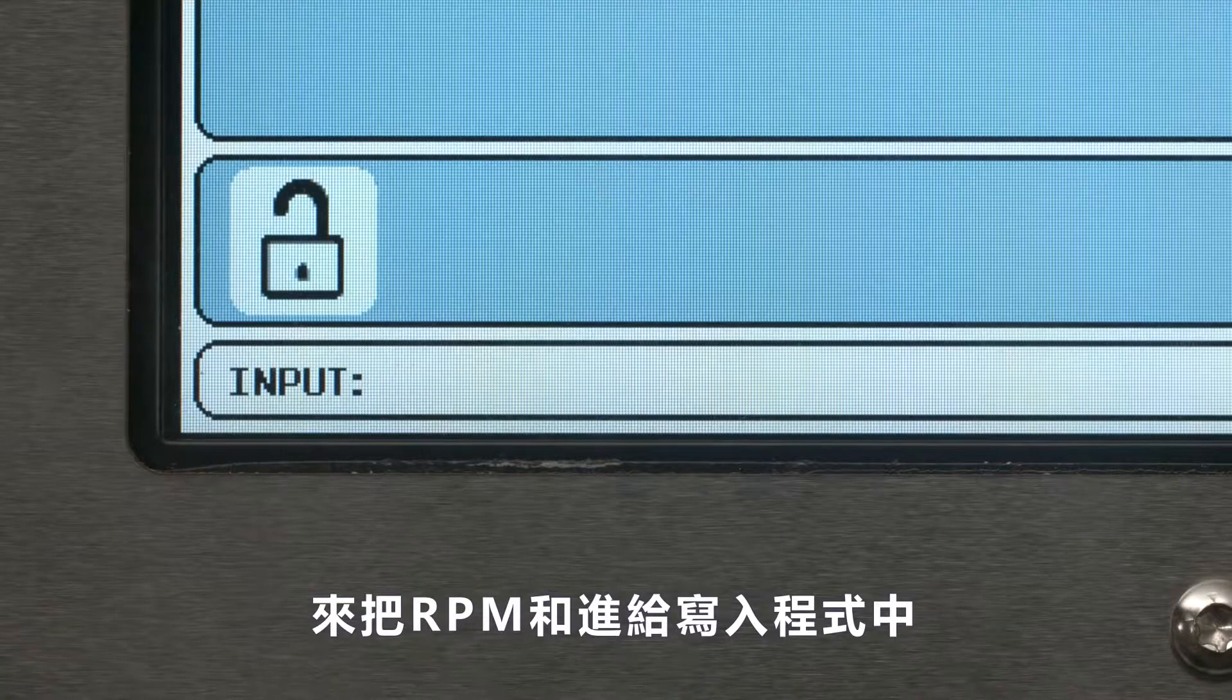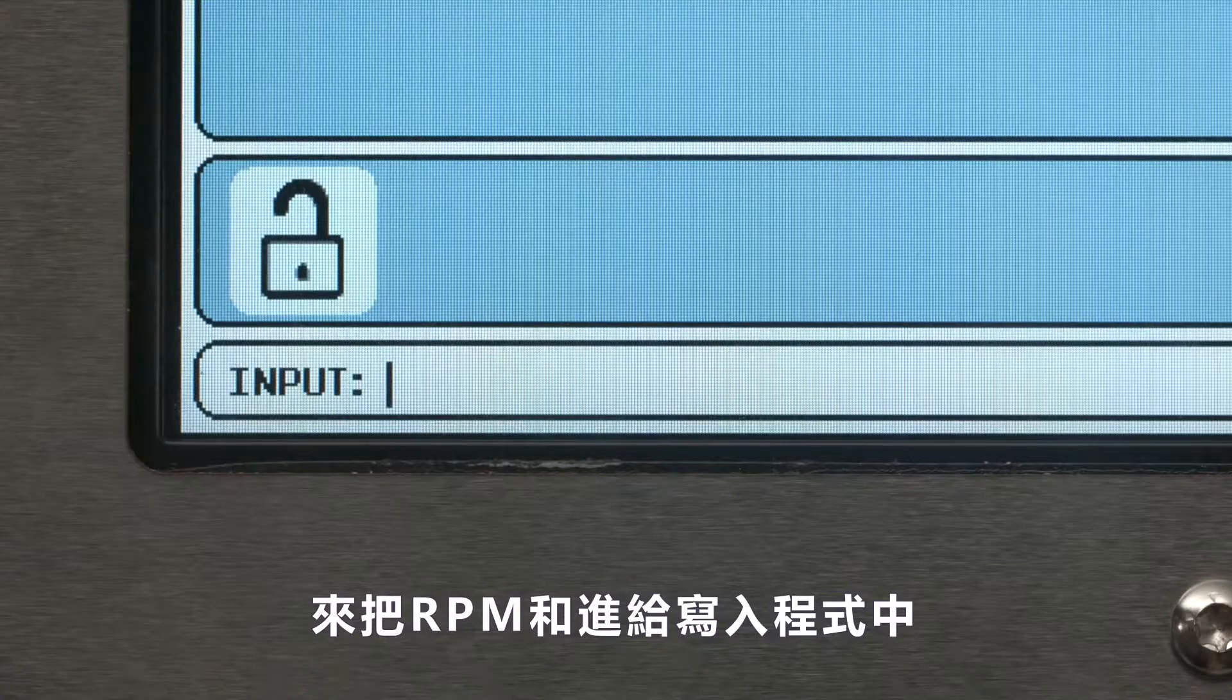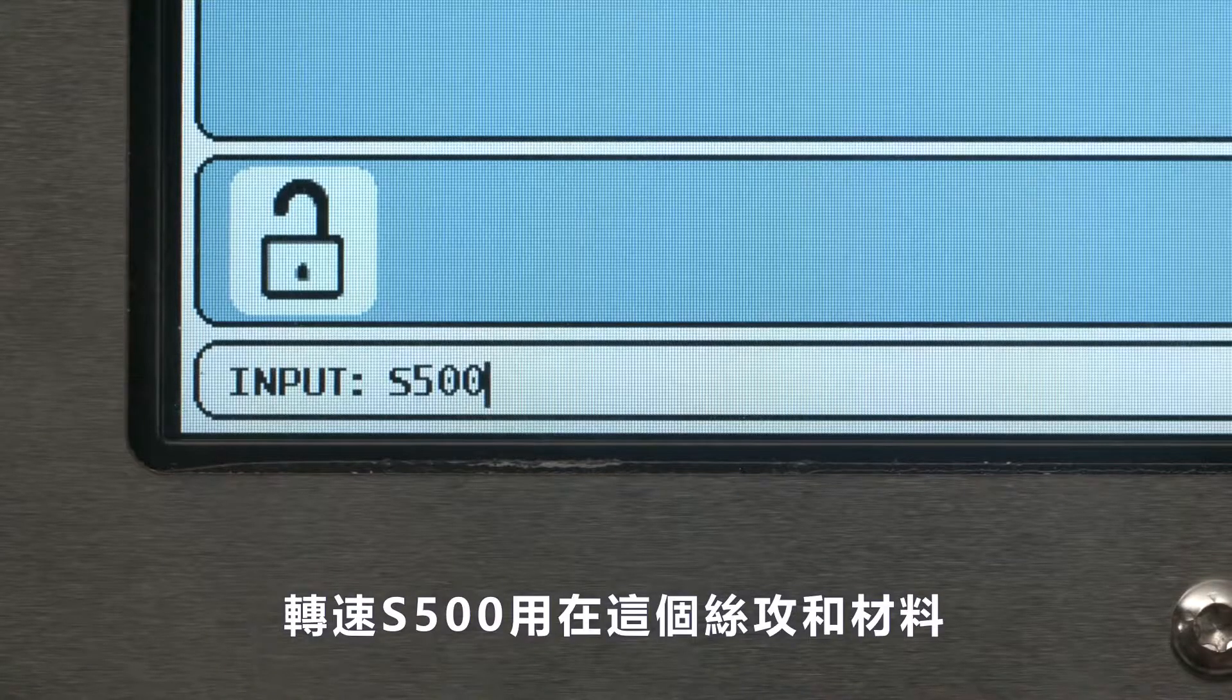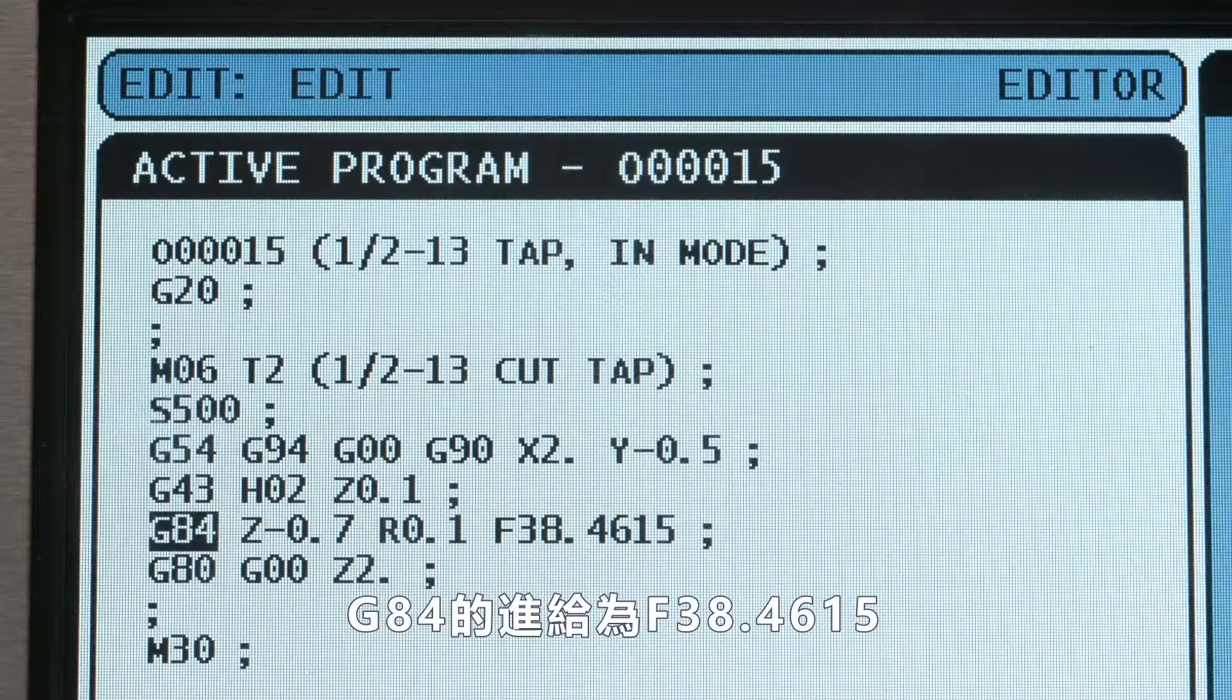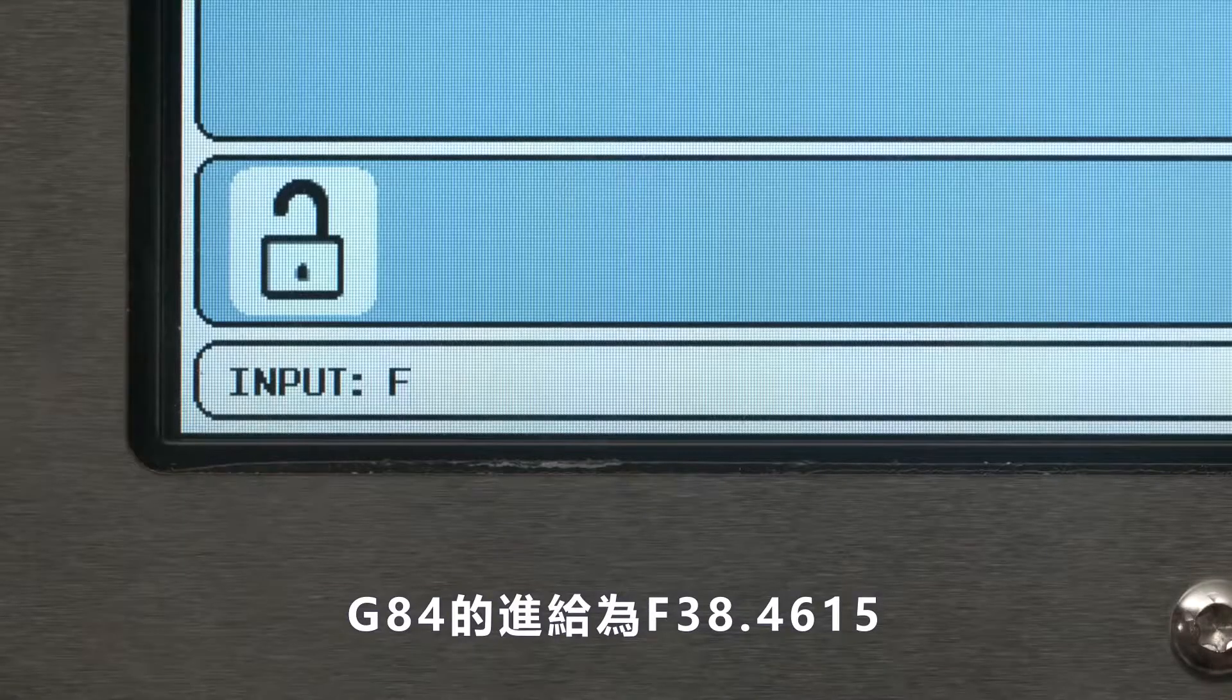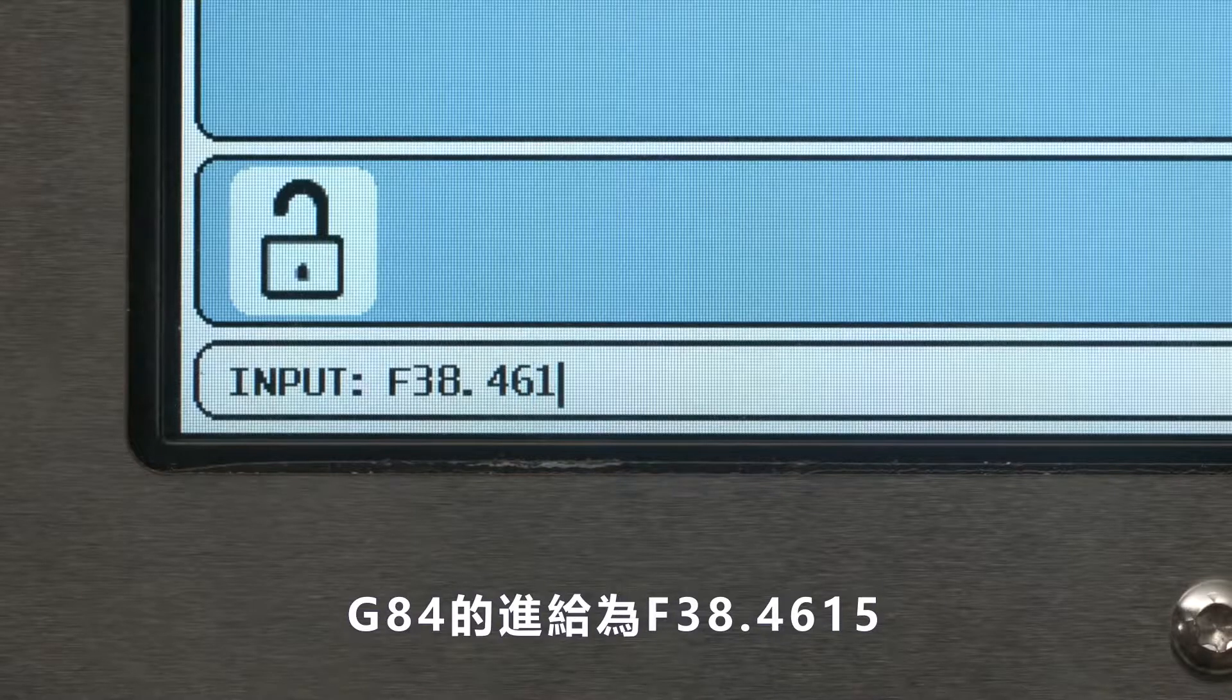Let's go ahead and write our RPM and our feed rate into our program. We're going to use S500 for this tap and material. And our G84 feed rate is going to be F38.4615.